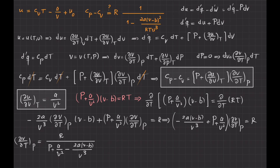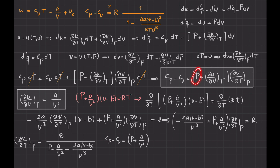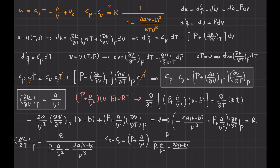Now that everything is ready, I substitute both partial derivatives into the generic formula. C_P minus C_V becomes P plus A over V-squared, multiplied by the partial of V with respect to T at constant P, which gives R over P plus A over V-squared minus 2A times V minus B divided by V-cubed.